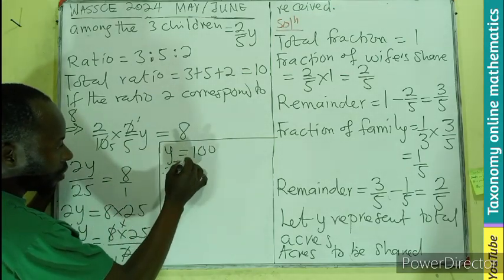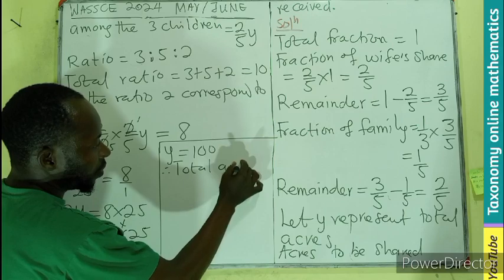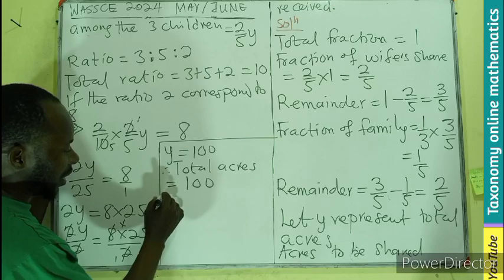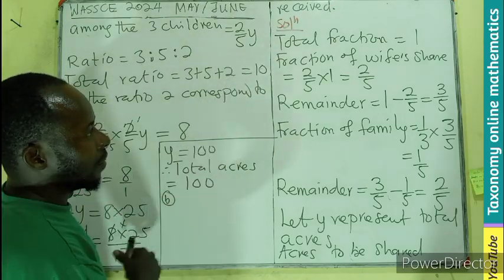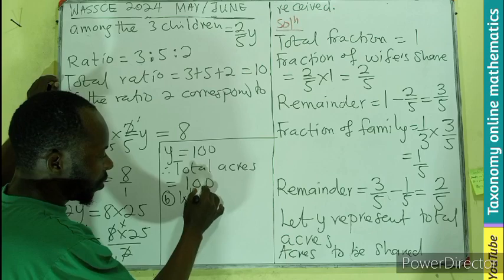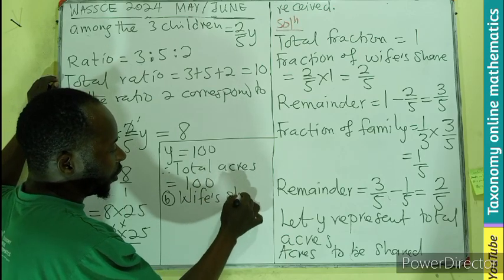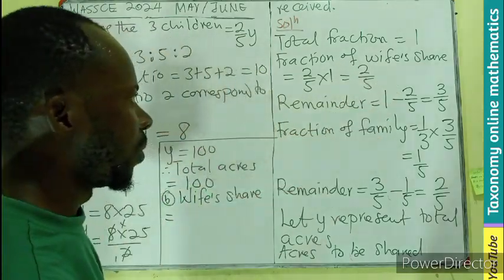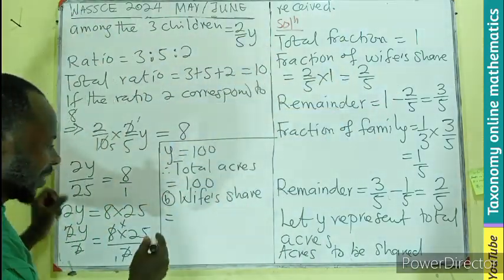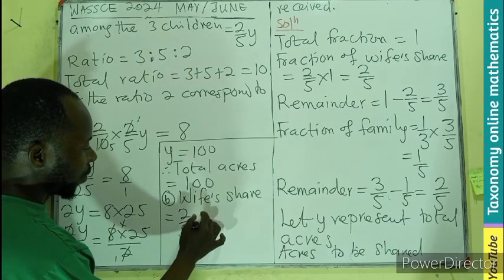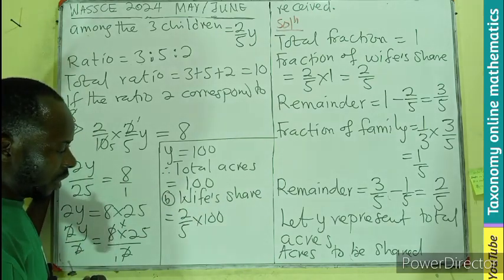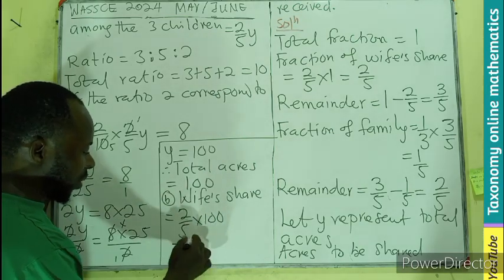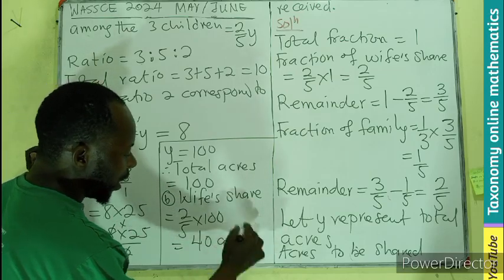Therefore, total acres will be equal to one hundred. That is for the first part of the question. The second part is the wife share. So we can say that wife share is going to be the wife is taking two-fifths of the total. And in this case is going to be two-fifths of one hundred. So that is going to be this is going here twenty times twenty times that will give us forty acres.